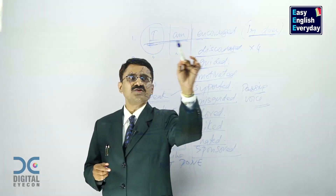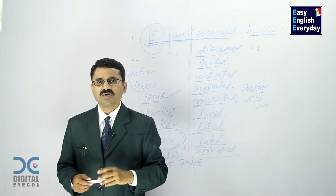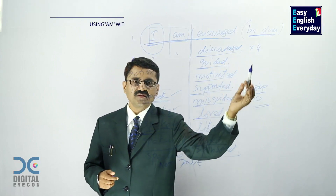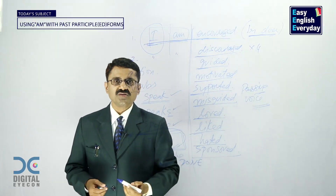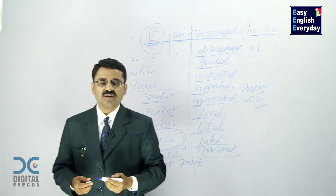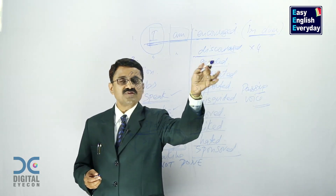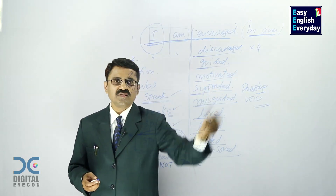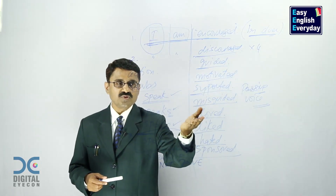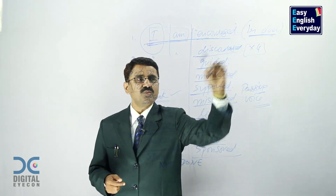There is one advantage of learning this type of sentence. For personal reasons, if you do not want to disclose the name of the doer, you can just end the sentence here and say: 'I am encouraged' — you need not say who is encouraging. 'I am discouraged' — you do not want to disclose the name of the person who discourages you. Simply say: 'I am guided. I am motivated. I am supported. I am misguided.' Try to practice it in four different ways.